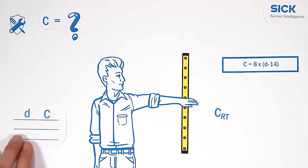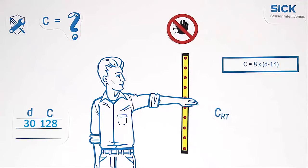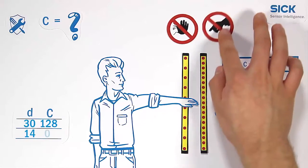In the case of a 30 mm resolution, we receive a value c of 128 mm ensuring hand detection. With the finger protection resolution of 14 mm, c becomes zero.